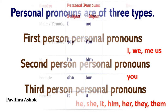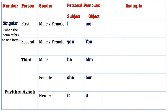Students, please look at this table to understand about personal pronouns. First we'll see personal pronouns in singular number. Do you know what is singular? When the noun refers to one item. You can see singular in the first column. In the second column: first, second, third — that is three types of personal pronouns: first person, second person, and third person.